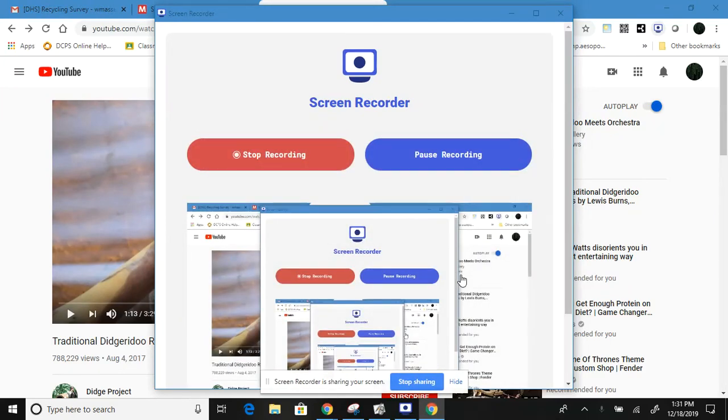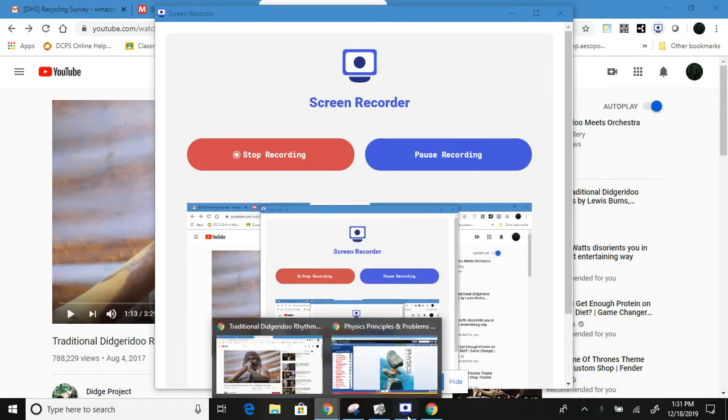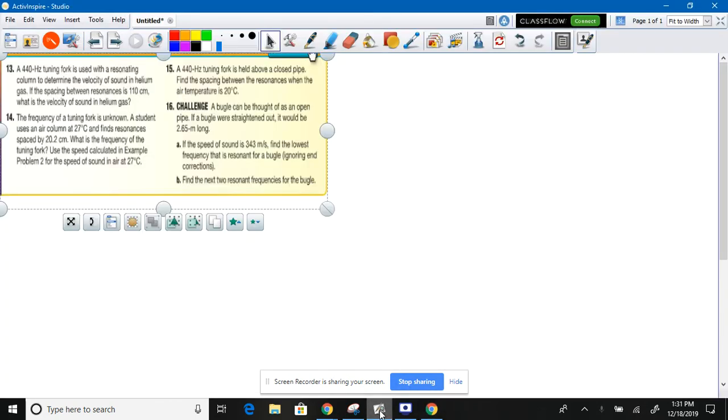Are you going to make a didgeridoo? Problems with sound. All right, here we go. DHS physics. Guys, draw a picture for number 13.